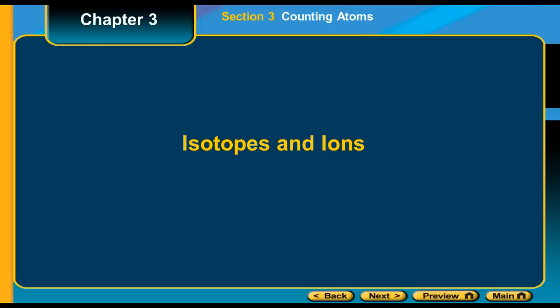All right, this screencast is about how to determine the number of protons, neutrons, and electrons from an atom, an isotope, and an ion.